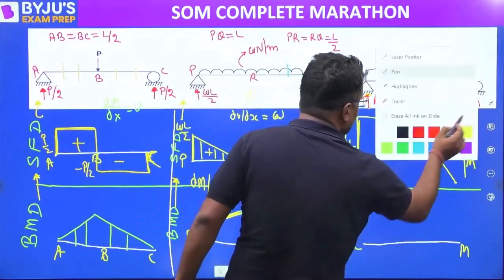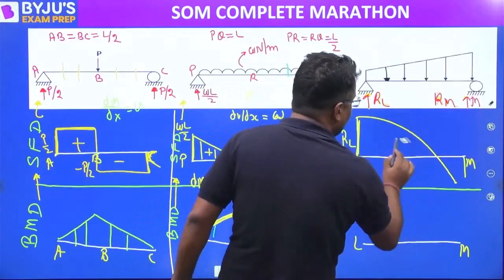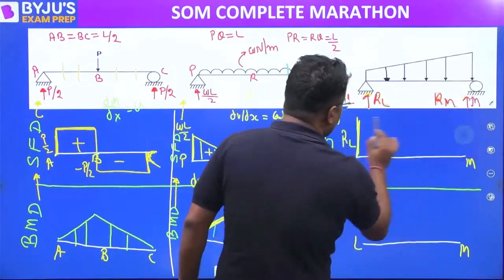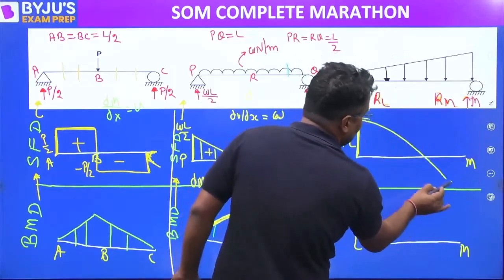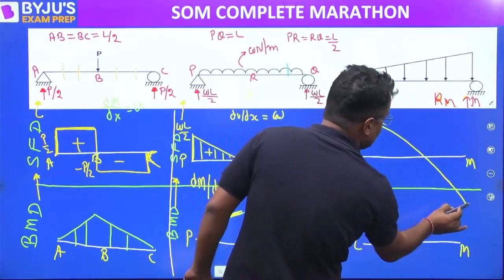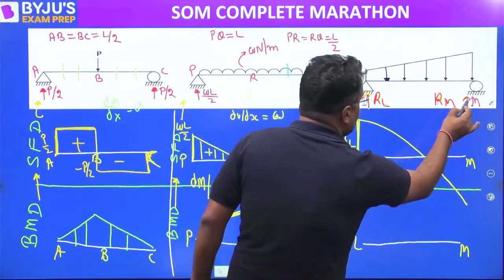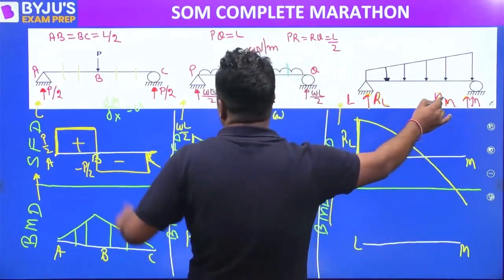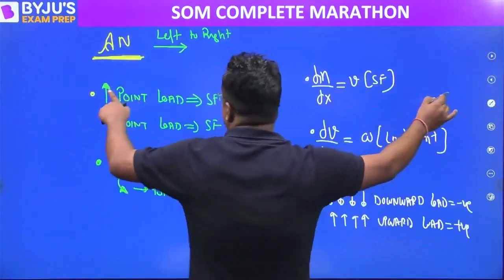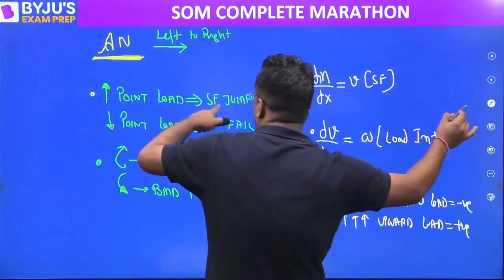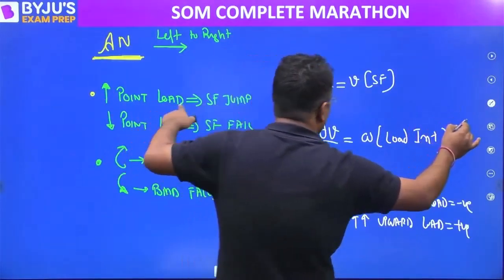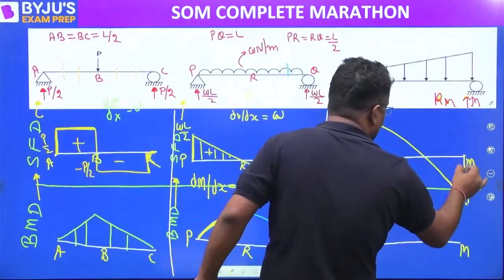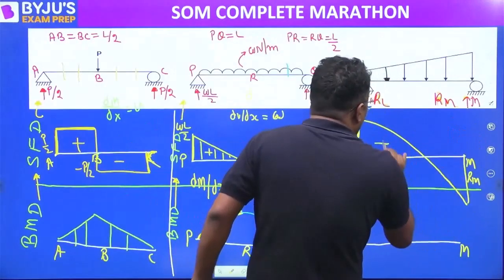Then upper load RM — upward point load — shear force jumps by RM. So it is jumping by RM at that support point.